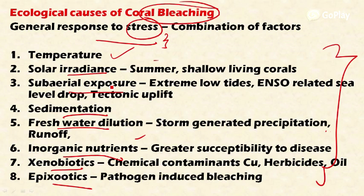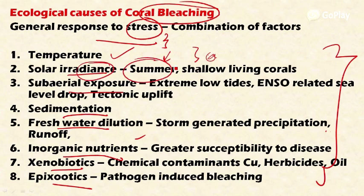Temperature extremes may happen during intense upwelling episodes or seasonal cold air outbreaks in the ocean-atmosphere, which bring cold temperatures to the ecosystem, destroying the zooxanthellae. The second factor is solar radiation: during summer, if there is higher solar radiation and the corals are living in shallow waters, that also leads to bleaching.